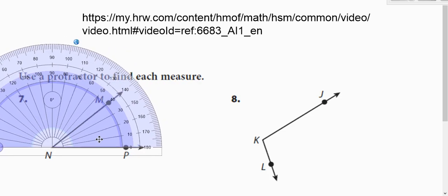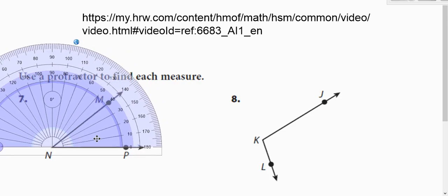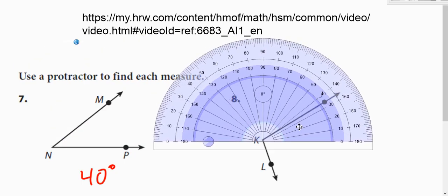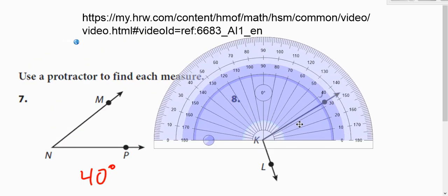So you can use your protractor to find the measure of the angle. You just line up your protractor with the crosshairs. Crosshairs on the vertex. And then you see that that other ray is pointing to 40 or 140. Since you can see it's an acute angle by looking at it, that would be 40 degrees. Clearly not 140 degrees, you can tell by looking.